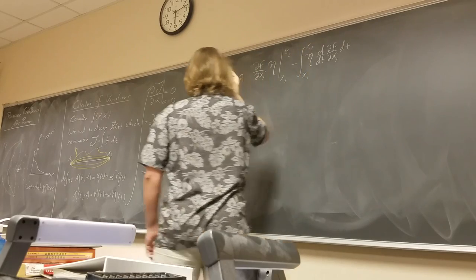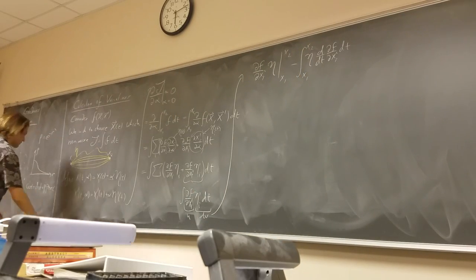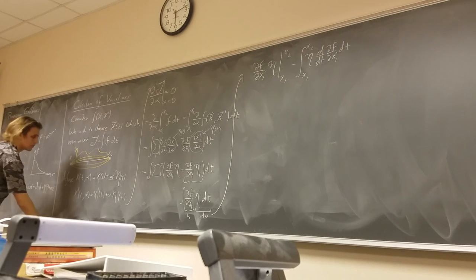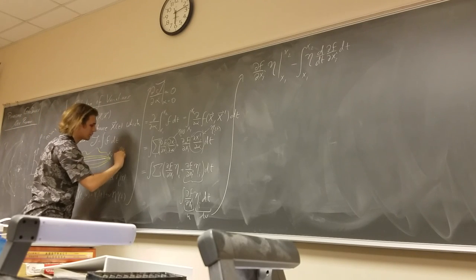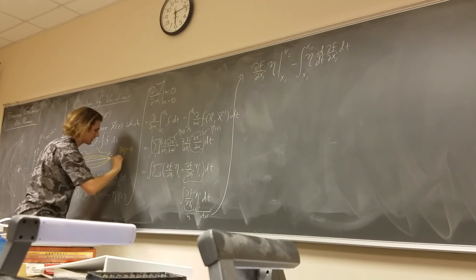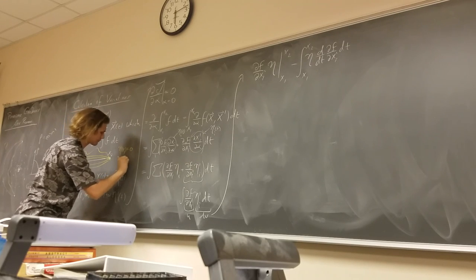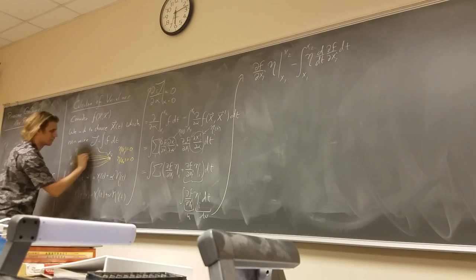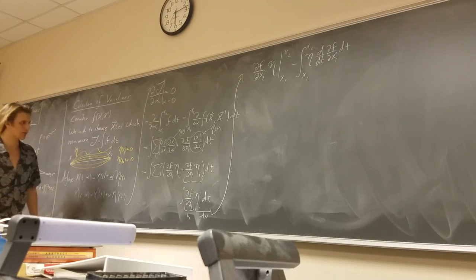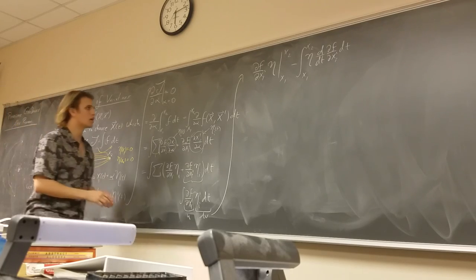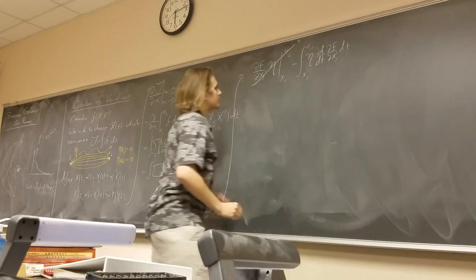What can we do now? We have a condition: eta at the endpoints must vanish. Otherwise you can imagine you'd end up somewhere besides the endpoints, which would be wrong. So we enforce that condition and the boundary term goes away.